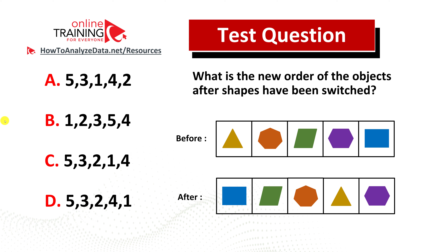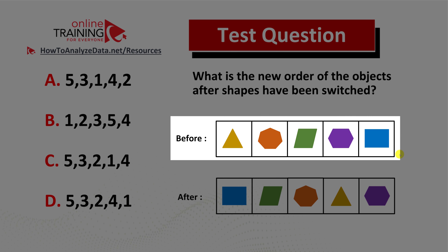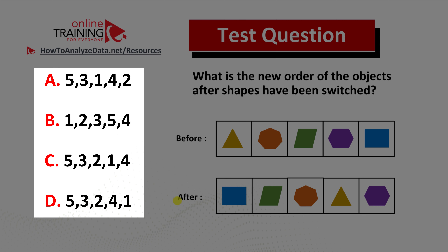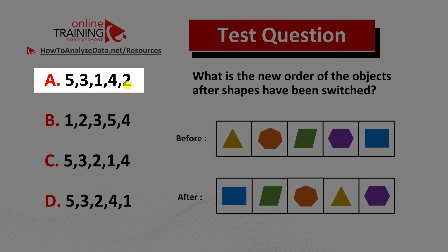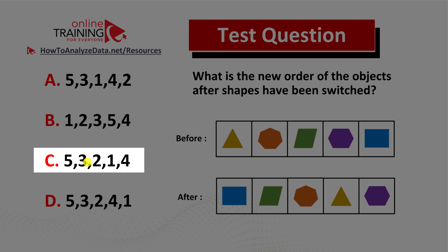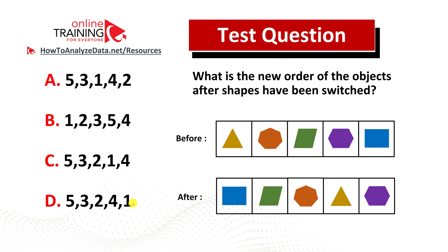Here's an interesting question from the test. What is the new order of the objects after shapes have been switched? You have a before sequence of five shapes and an after sequence, with four different choices: choice A: 5 3 1 4 2; choice B: 1 2 3 5 4; choice C: 5 3 2 1 4; and choice D: 5 3 2 4 1. Now might be a good time to pause this video to figure out the answer on your own.